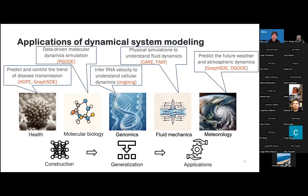Finally, we briefly review the applications of dynamical system modeling. Our framework can be used in different areas, including health, molecular biology, genomics, fluid mechanics, and meteorology. We have used our model to predict and control the trend of disease transmission. We have also conducted a data-driven molecular dynamics simulation using our framework. We can also use our framework to infer RNA velocity to understand stale dynamics — this is an ongoing project. We can also do physical simulation to understand fluid dynamics. Lastly, we can also use our model to predict future weather or meteorological dynamics.